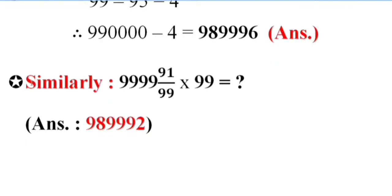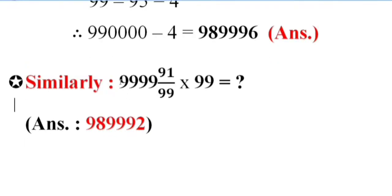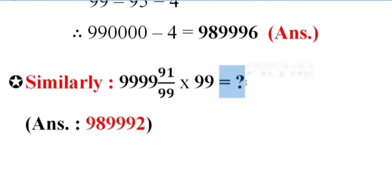Similarly, 4-digit 9 and 91 by 99 into 99 equals what? Answer: 98, triple 9, 2.